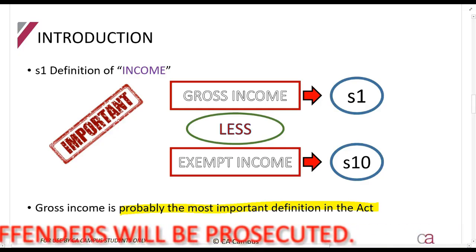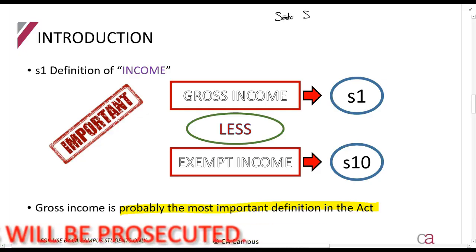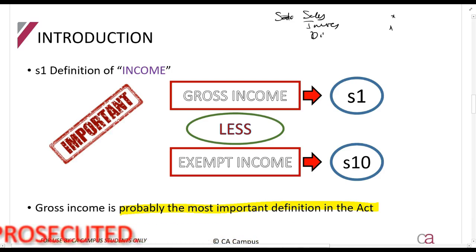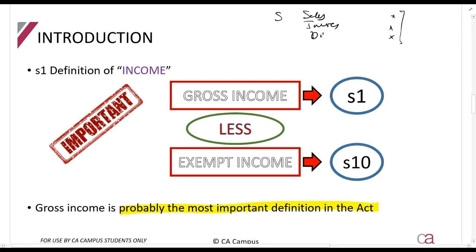That is why when we do calculations — for a company, where you have sales, interest received, and dividends received — most of those amounts that you include all come from the gross income definition. When you're an individual, your salary is included, but if your grandma gives you birthday money, why do you not include that in your tax return? All of that comes from the gross income definition. It tells us what to include and what not to include.